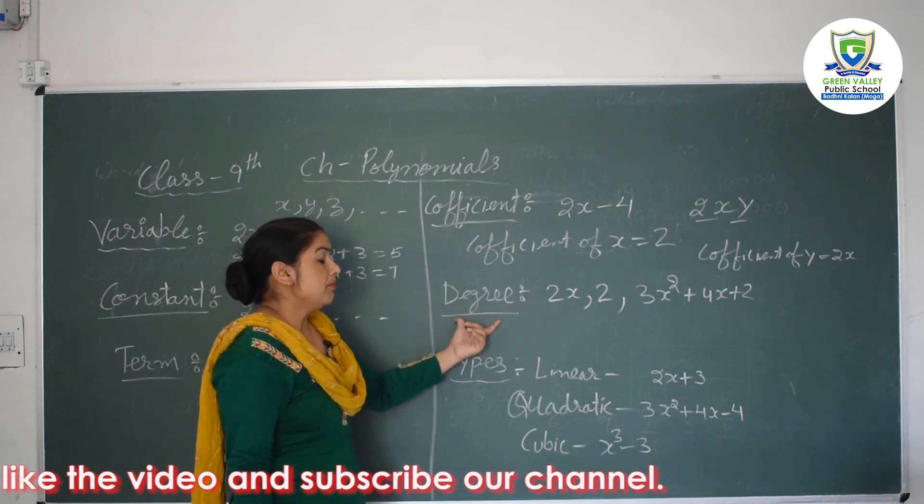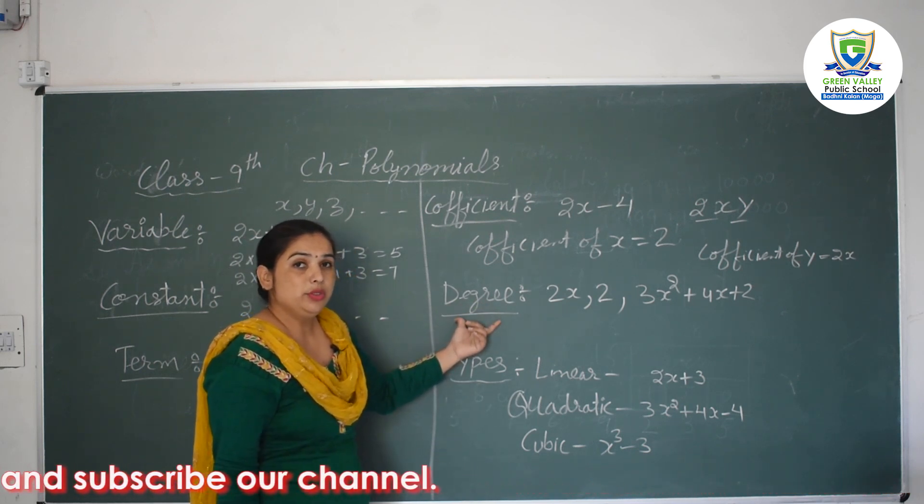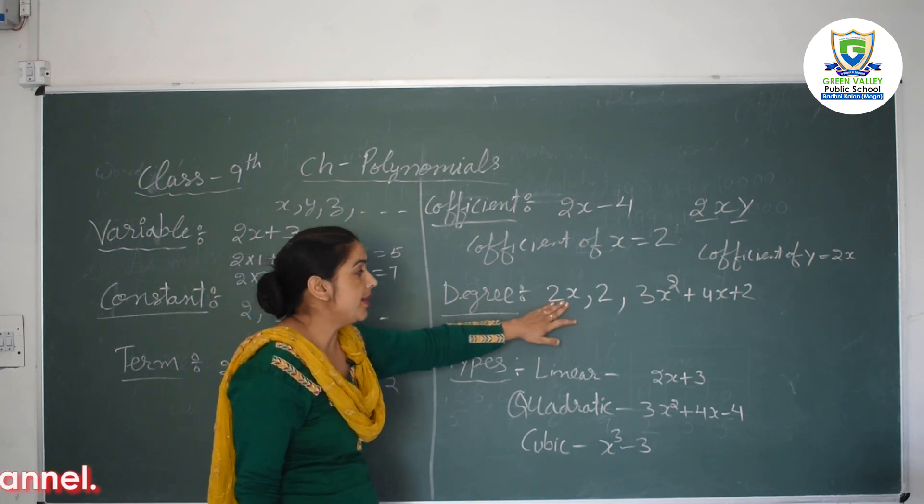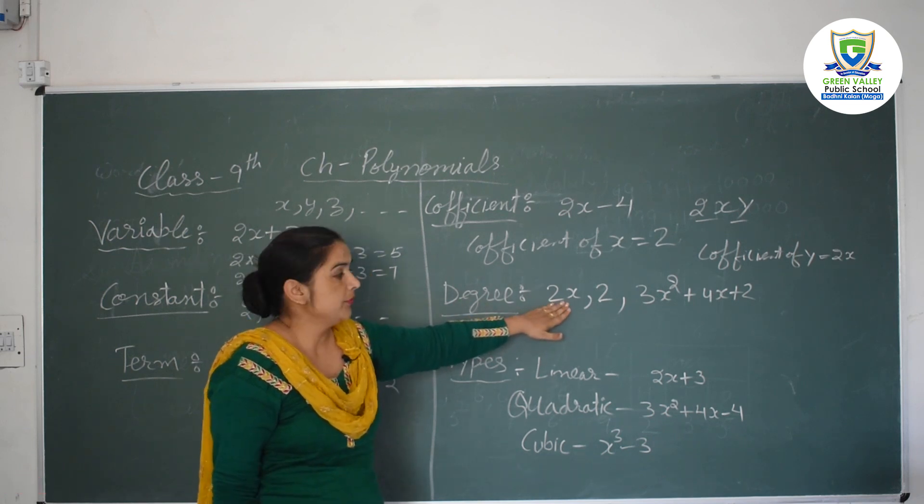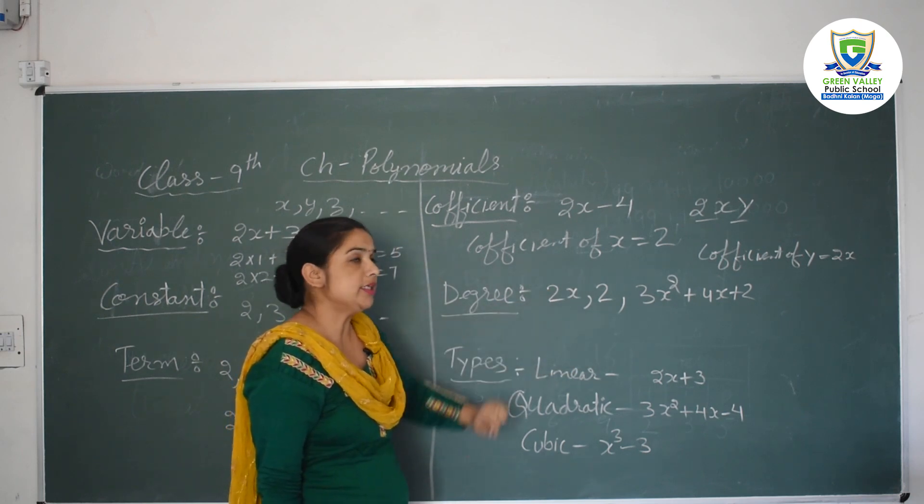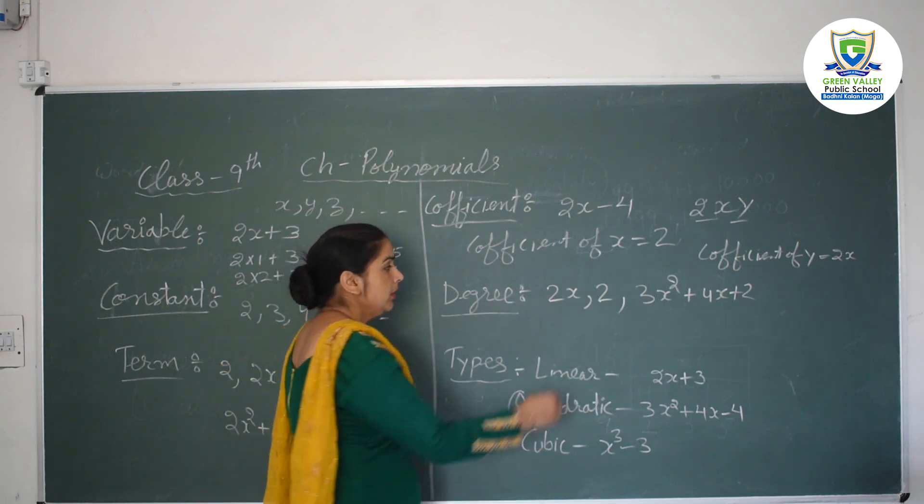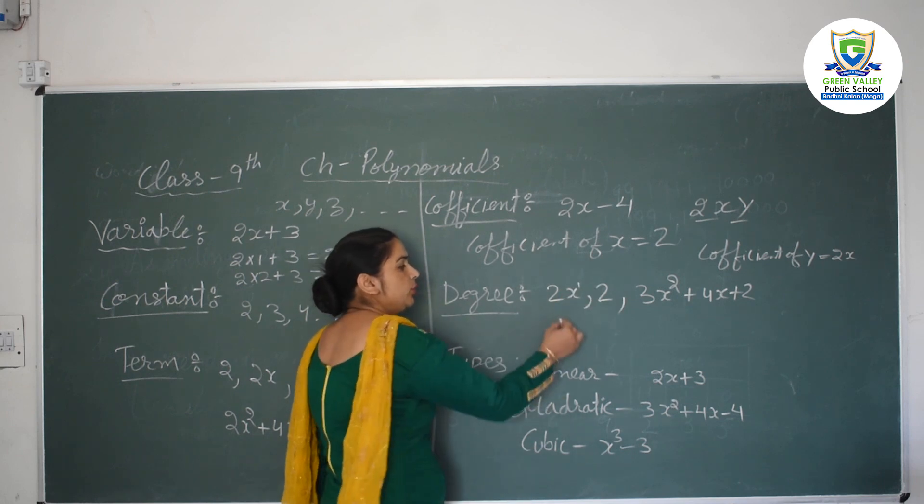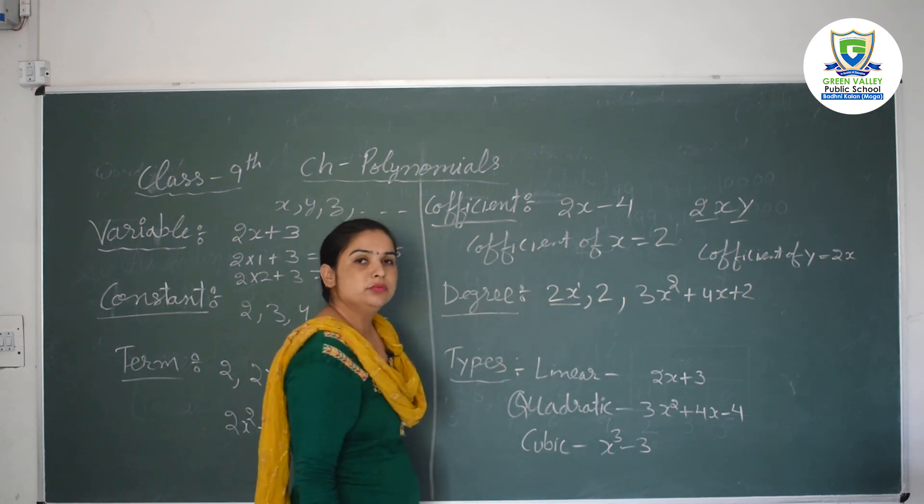And then next main step is degree of the polynomial. Degree means the highest power of the polynomial. Like I have written some examples. Here x has highest power, nothing in the power means here 1. So degree of this polynomial is 1.